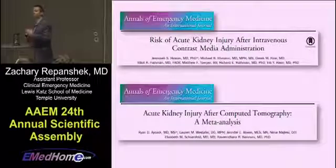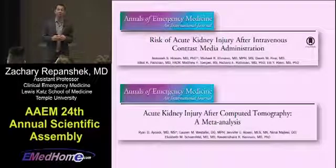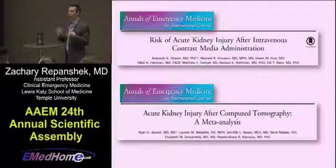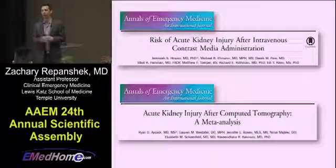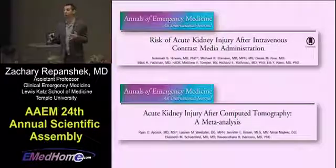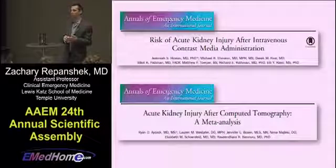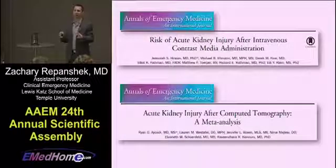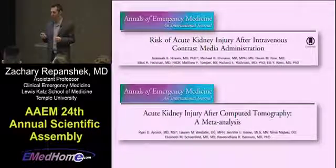Last year, in 2017, emergency medicine got in the game. The Annals put out two articles over the course of the year — very similar kinds of studies as those done in radiology. One was a meta-analysis, one was a propensity matching study. Both also found that they could not find a link between acute kidney injury and IV contrast when taking into account all those other variables. This wave of studies is what's starting to make people question whether contrast-induced nephropathy is really a thing at all.